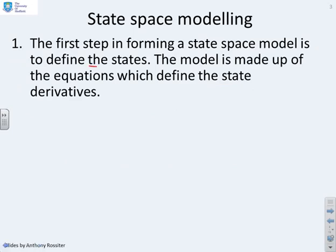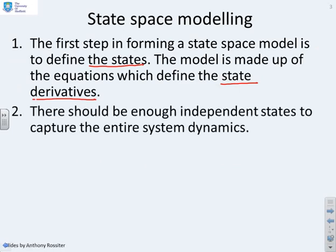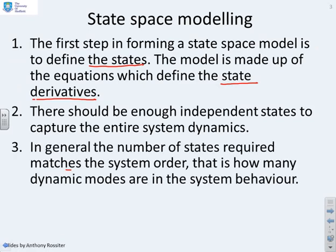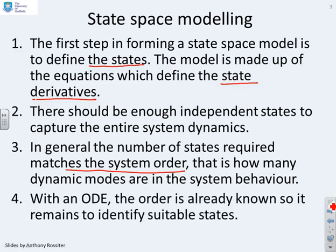The first step in forming a state space model is to define the states. The model is made up of equations which define the derivatives of your states. There needs to be enough independent states to capture the entire system dynamics. In general, the number of states required will match the system order — the number of dynamic modes tells you how many states you need. With an ODE, the order is already known, because an nth order ODE is clearly nth order, so it remains solely to identify which n states are most appropriate.